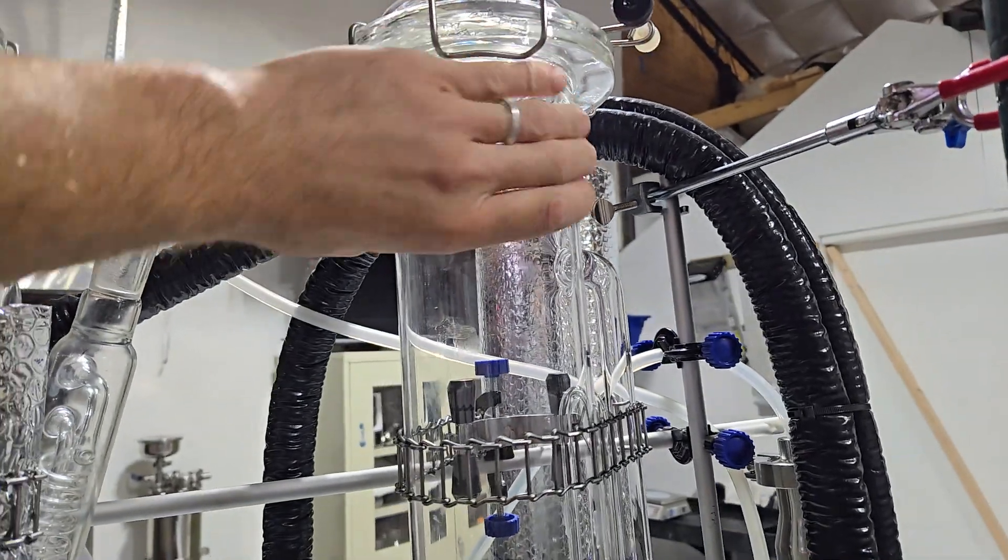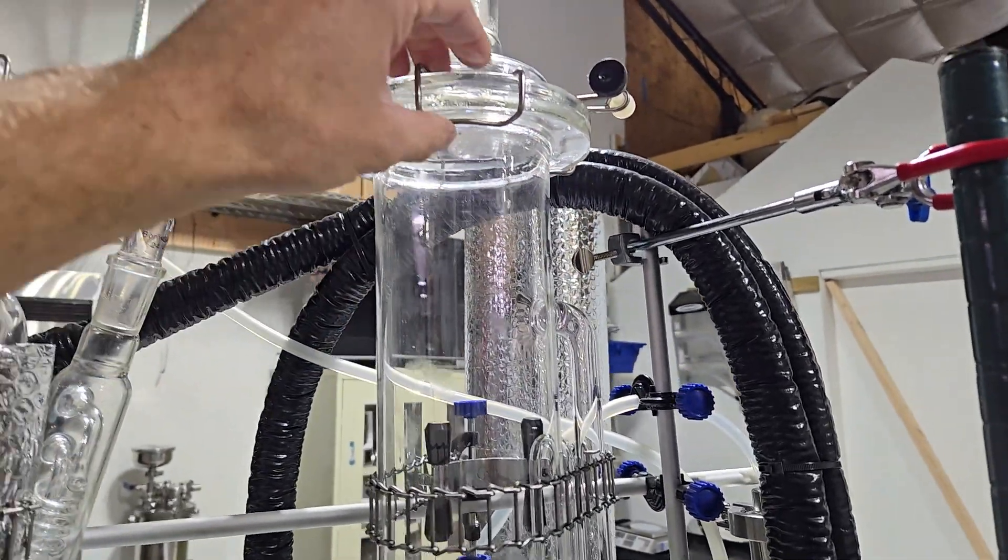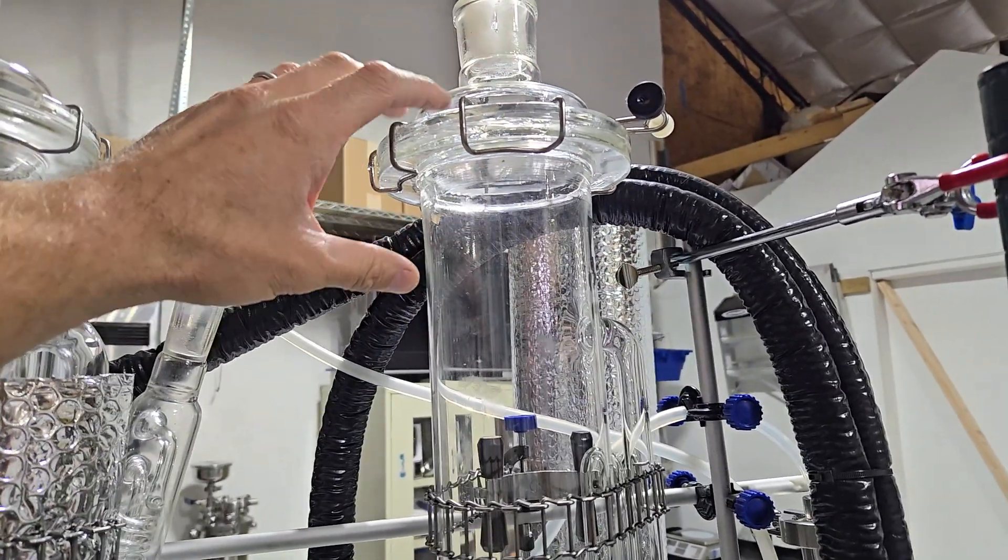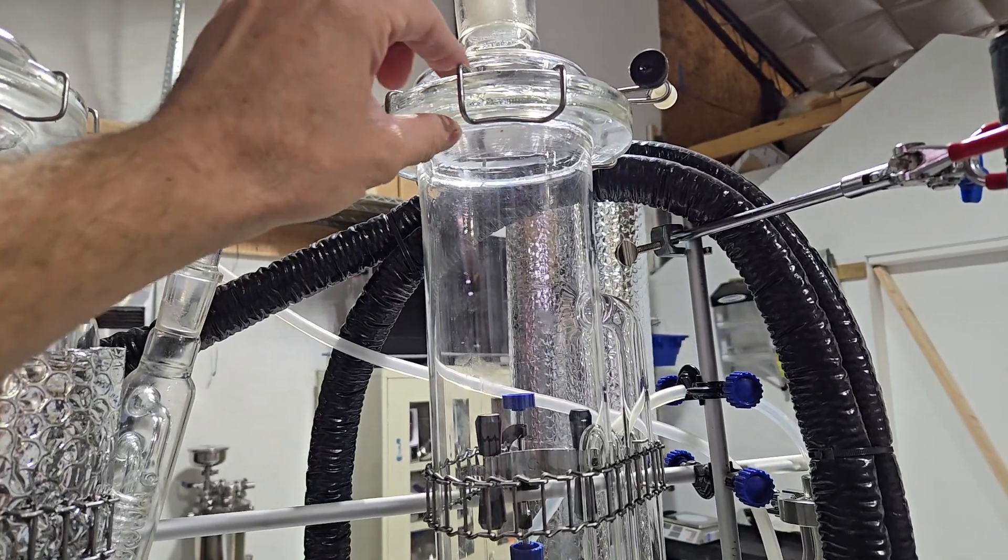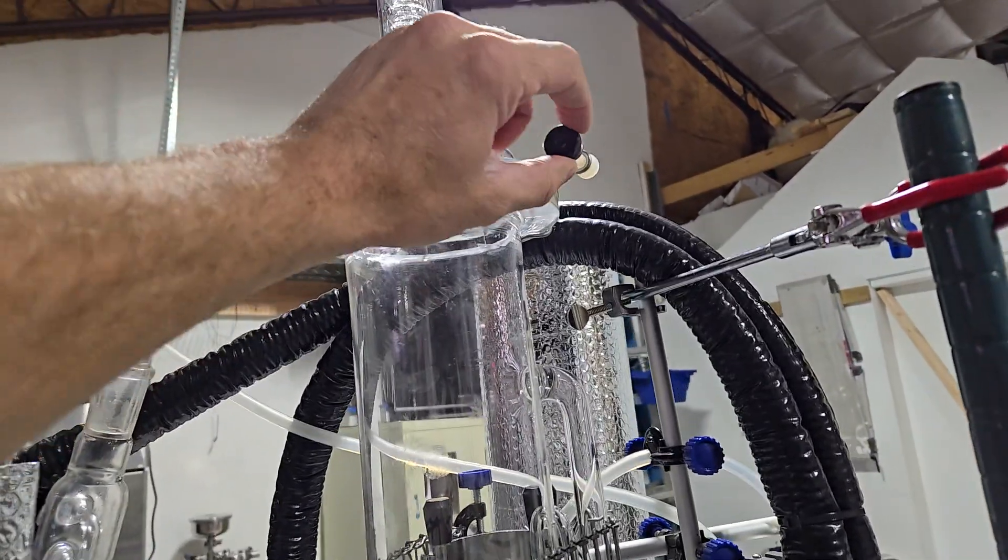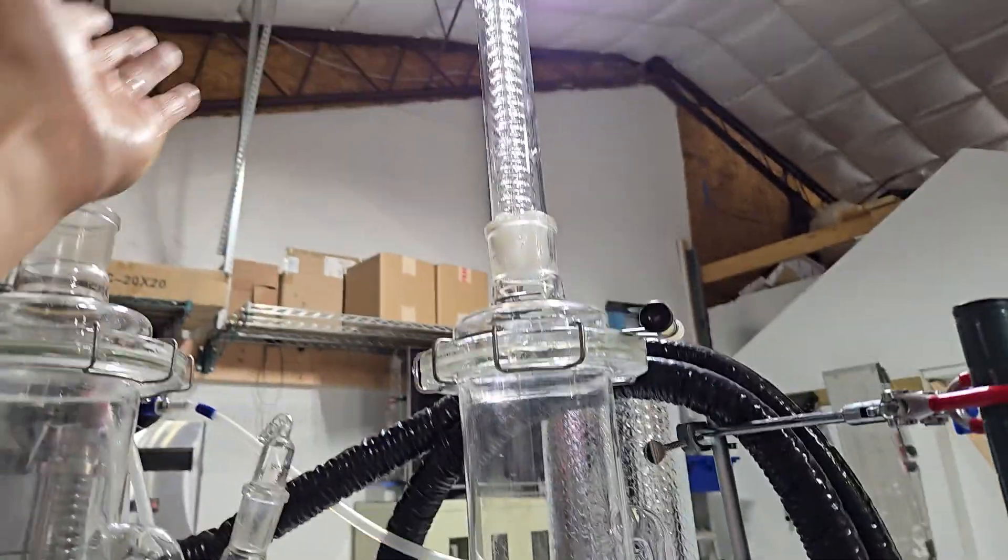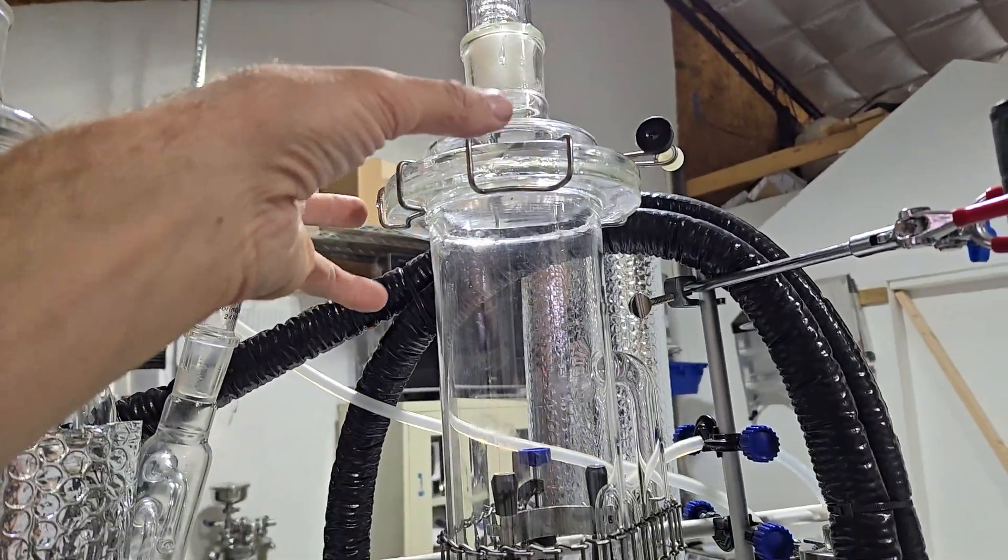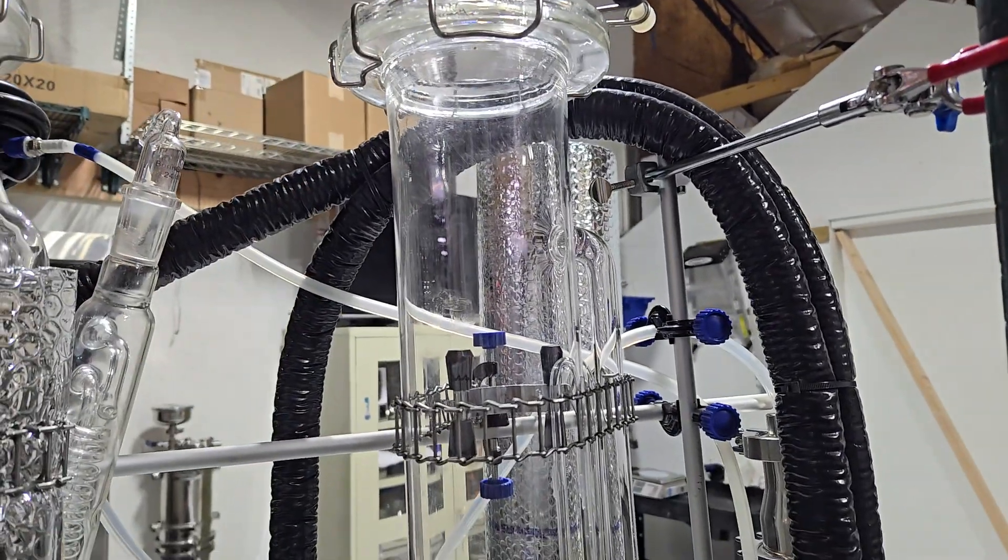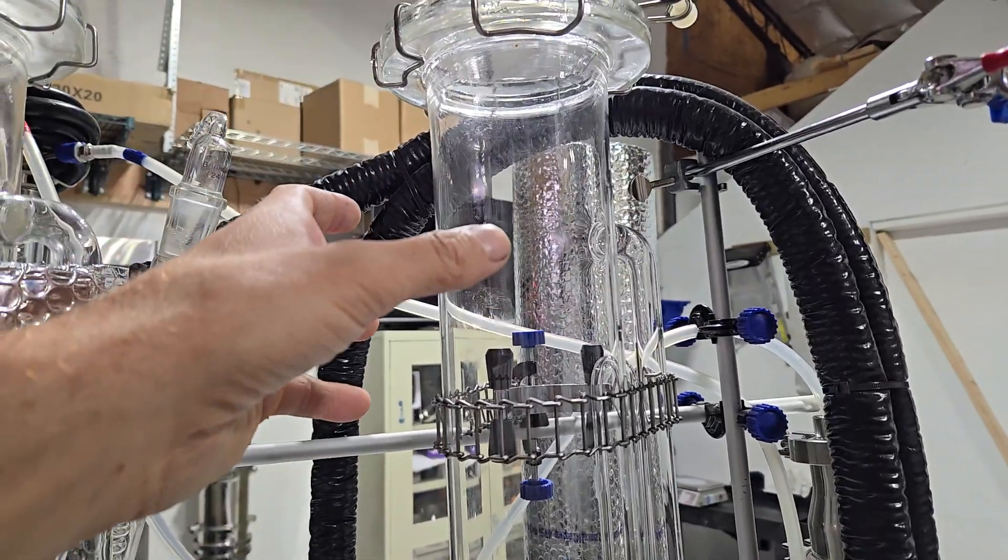A couple other features—unlike a lot of others—is full diameter opening. So you undo this screw here, take off this clamp, take off your condenser, and then you can load and unload your product very easily.